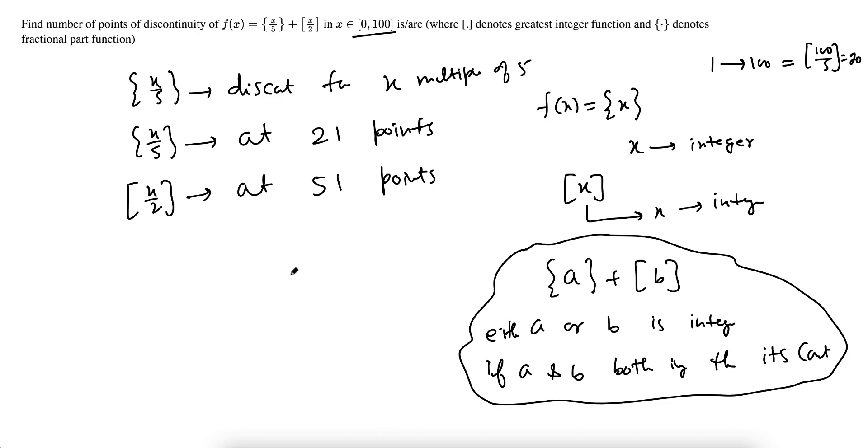Understood? It means overall, I am getting 72 points where possible discontinuity. Here is a problem. What is the problem?